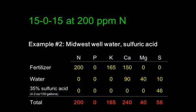Now compare this to the same 15-0-15 fertilizer at 200 ppm nitrogen, but using Midwest well water — which has a lot of calcium and magnesium — and sulfuric acid to neutralize the alkalinity. The total ends up being 200 nitrogen, zero phosphorus, 165 potassium — same as before — but now 240 ppm calcium, 40 ppm magnesium, and 56 ppm sulfur. So in this case, calcium, magnesium, and sulfur levels are much higher because of contributions from the water and the acid.